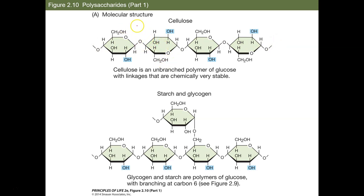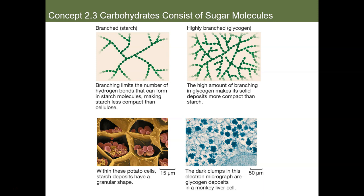Cellulose is very solid and rigid. Meanwhile, starch and glycogen have all these different branches that shoot off to the side, which provide extra areas to be targeted for reactions. Starch is found in plants and has a somewhat loose, granular appearance — you can see it in potato cells. Glycogen is really dense and highly branched, and it can be found in places like kidneys and livers, forming dark pouches and pockets.